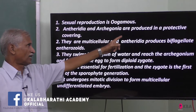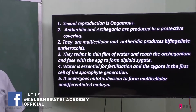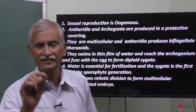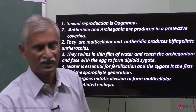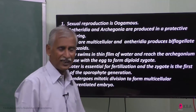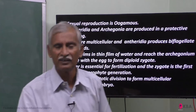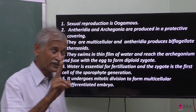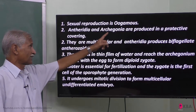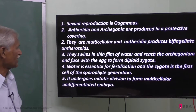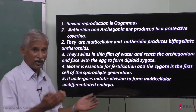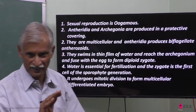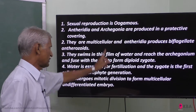Antheridium and archegonium are produced in a protective covering. Antheridium is the male sex organ of bryophytes. Archegonium is the female sex organ of bryophytes. Both the male sex organ and female sex organ are produced in a protective covering. The plant body is multicellular.